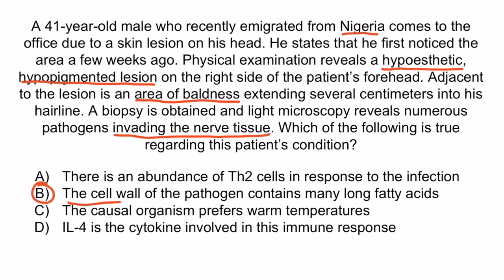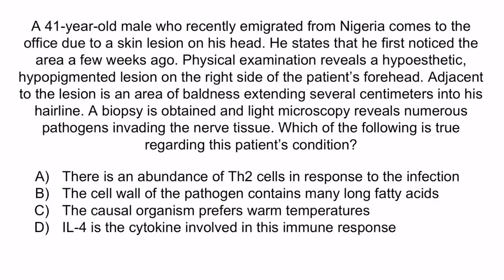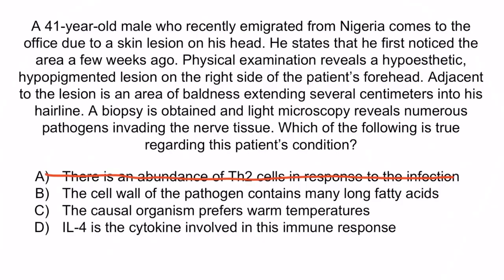The correct answer is B: the cell wall of the pathogen contains many long fatty acids — this is describing mycolic acid. The deputy's microphone in the image is here to help you remember that the cell wall of Mycobacterium leprae contains mycolic acid, partially responsible for the appearance of the organism when stained with the acid-fast stain. A is incorrect because this patient has the tuberculoid form of leprosy, which is characterized by a Th1 response, not a Th2 response. C is wrong because the organism prefers cool temperatures, not warm temperatures — this is why it infects the skin and nerve tissue. D is wrong because IL-4 promotes B cell activation, which is seen in the lepromatous form; this patient has the tuberculoid form, so interferon gamma is released, which activates macrophages. The correct answer is B, and with that, you've learned everything you need to know about Mycobacterium leprae.